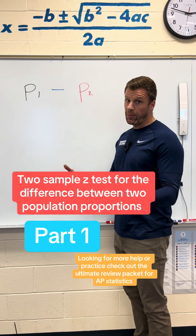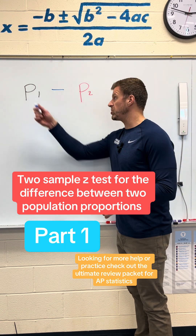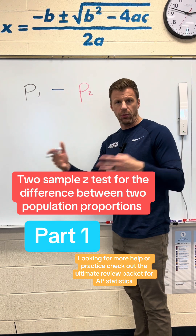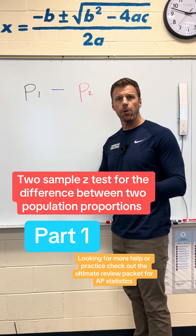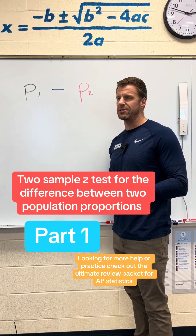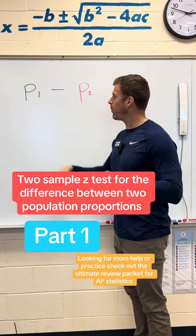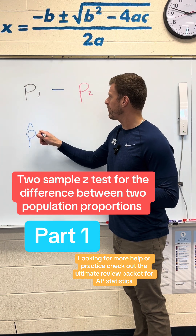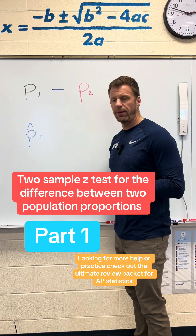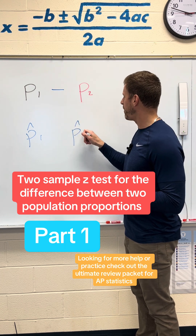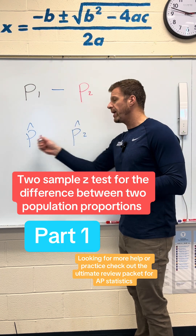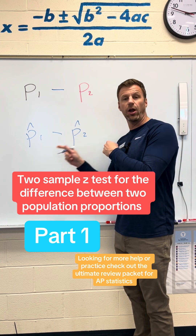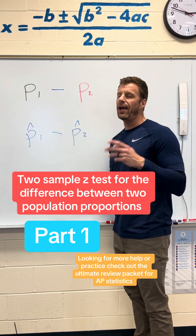Now, one way we can answer this question is to ask every single man and every single woman, and then we could actually get the true population proportions — but that's way out of the question. What we can do is get a sample from population one, get a sample proportion from population two, and analyze the difference between our two sample proportions.